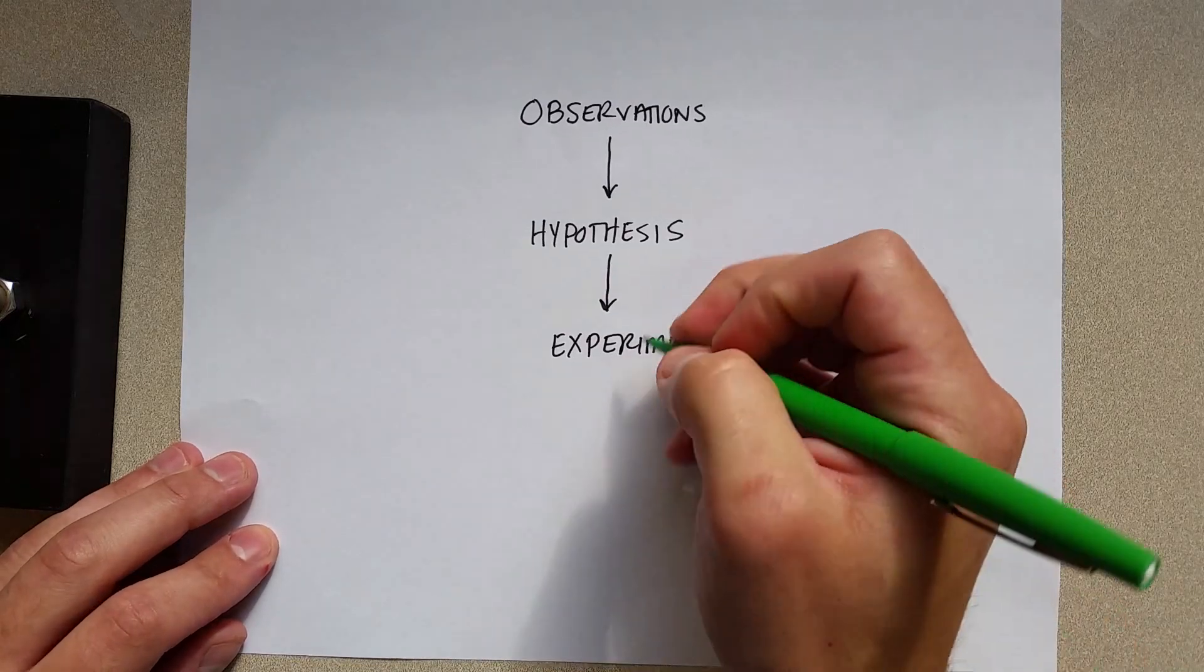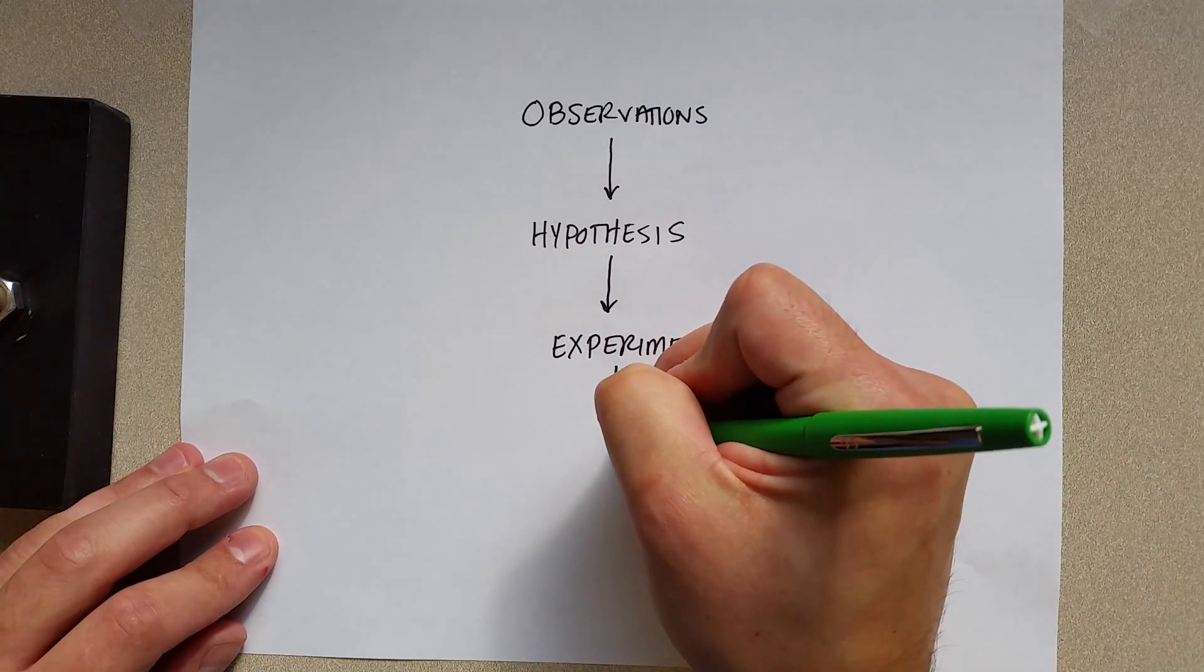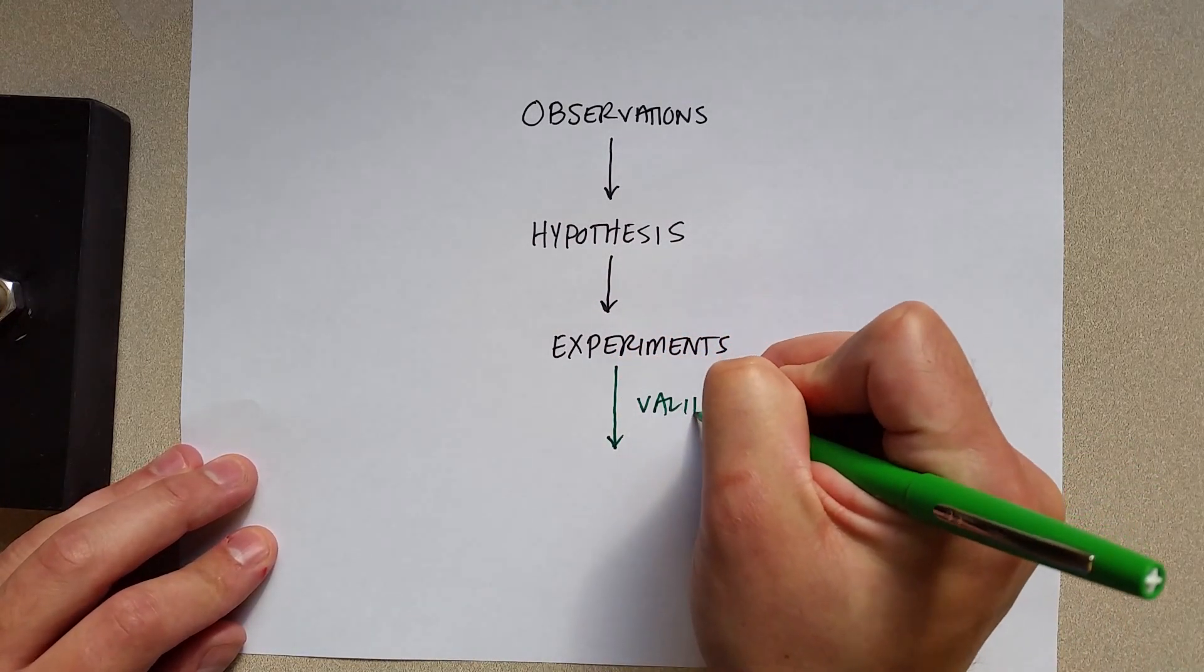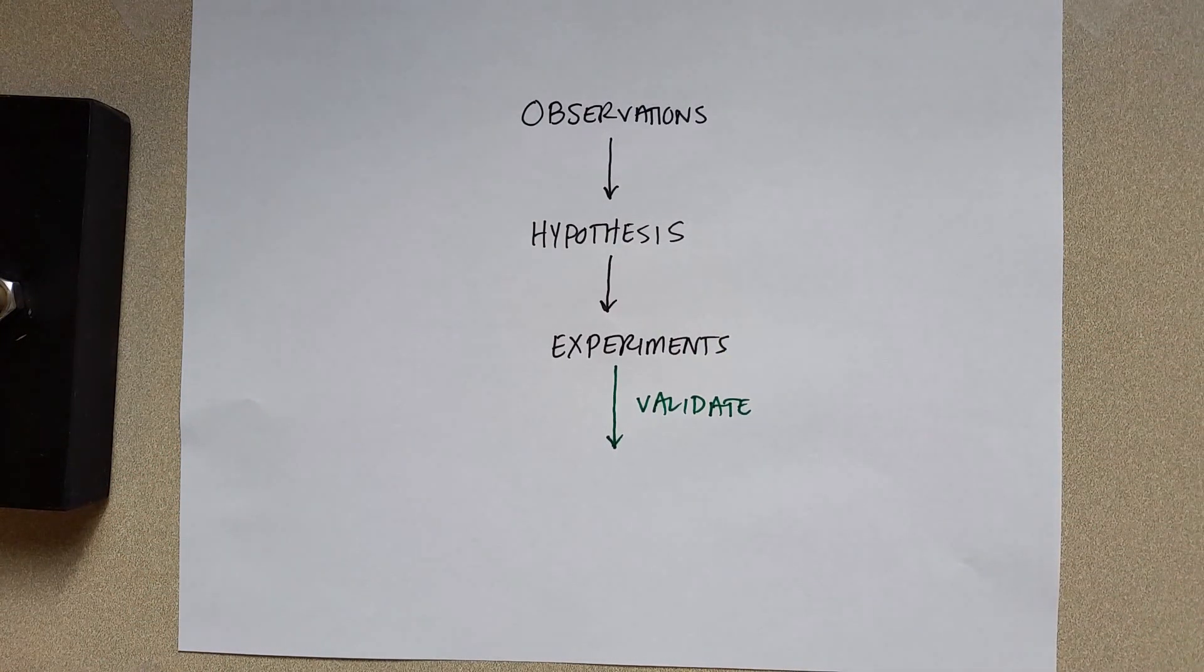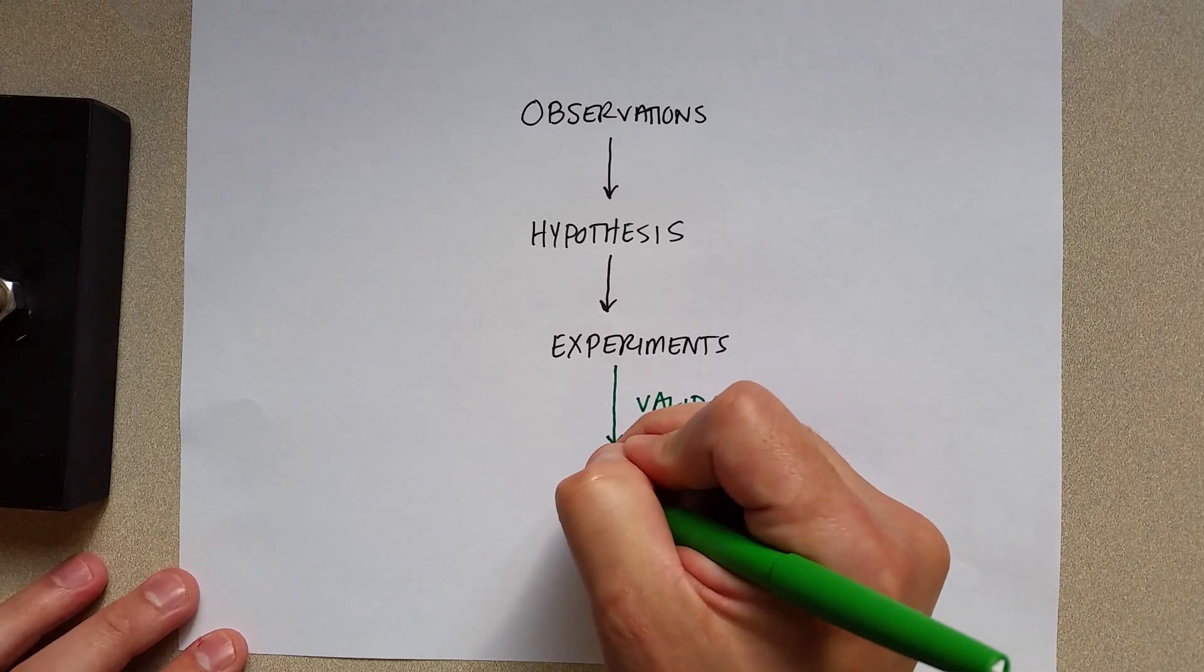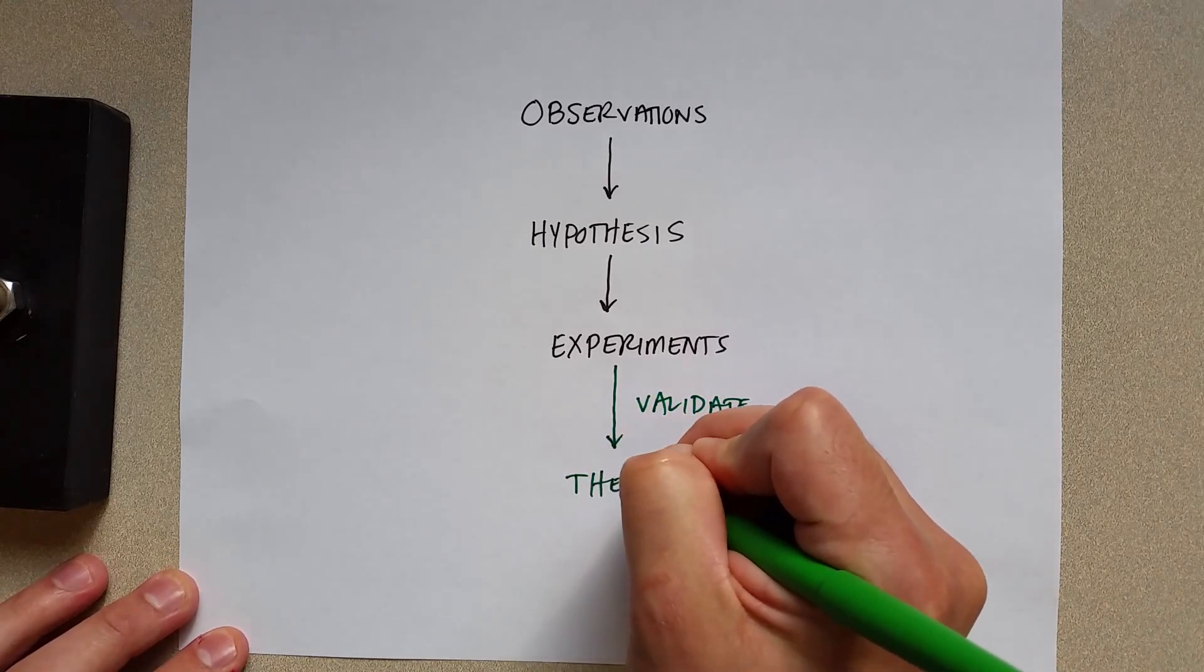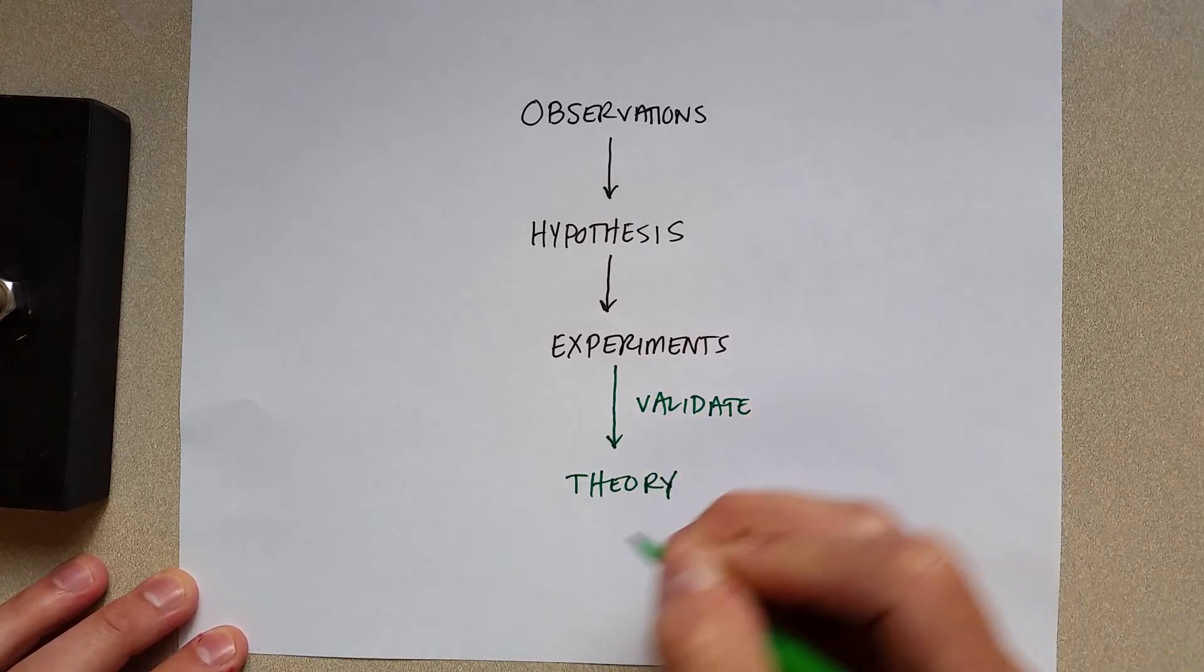Now, if the experiments validate the hypothesis, that is when we are going to call it a theory, or our explanation based on experimental evidence.